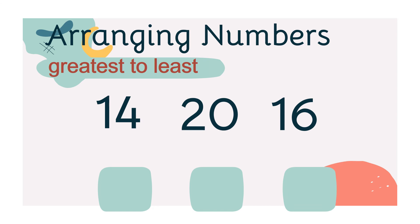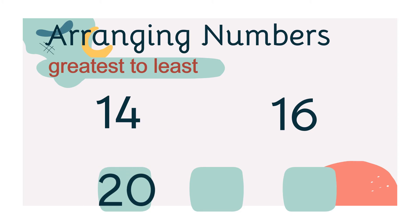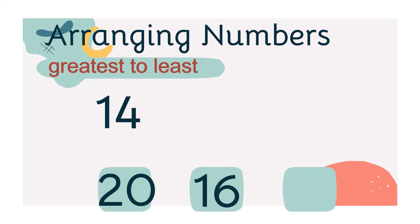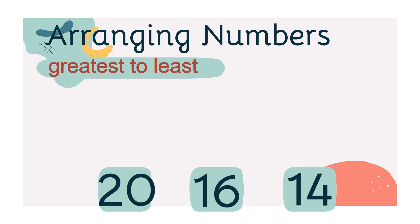And last, let's arrange these numbers from greatest to least: 14, 20, and 16. Which one is the greatest number? Very good! It's number 20. How about the next number? Very good! It's number 16. And the least number is number 14. Great job!